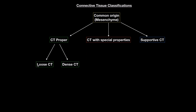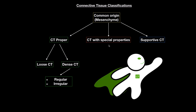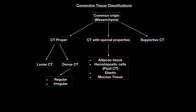Loose connective tissue is easy to identify — you'll see fibers running in all directions and can easily find the ground substance and nuclei. Dense connective tissue is classified into regular and irregular. Connective tissue with special properties includes adipose tissue, which stores energy as lipids; hematopoietic or fluid connective tissue; elastic connective tissue found in the lungs, aorta, and skin; and mucous tissue. Supporting connective tissue consists mainly of cartilage and bone.